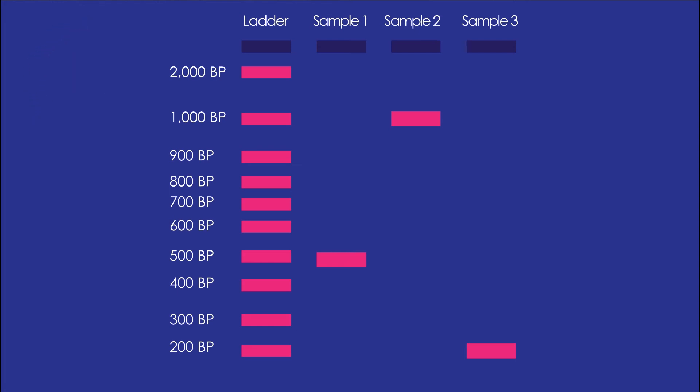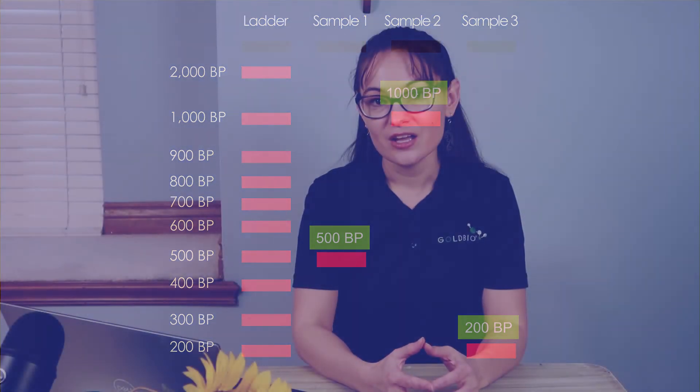Based on the ladder, sample three is about 200 base pairs, sample one is about 500 base pairs, and sample two is about 1,000 base pairs.